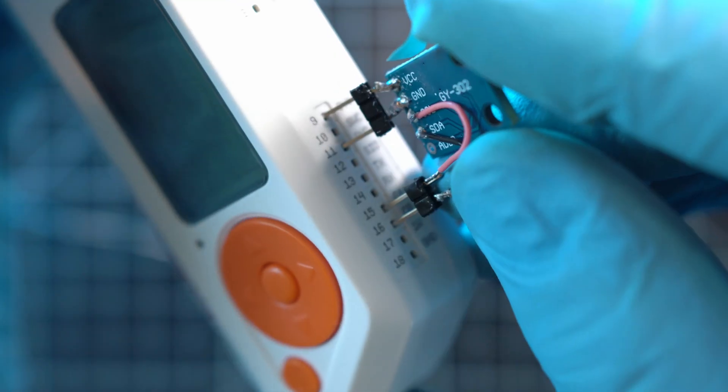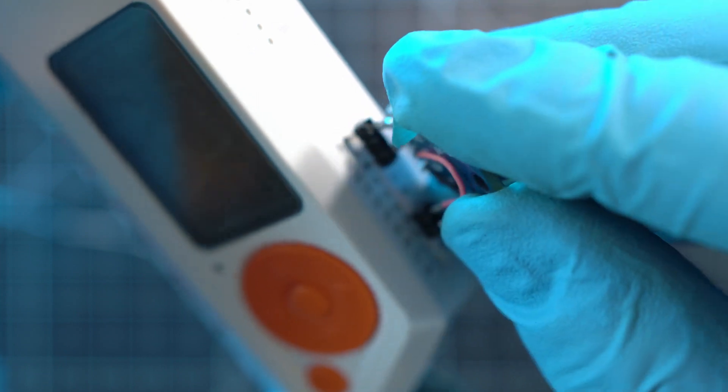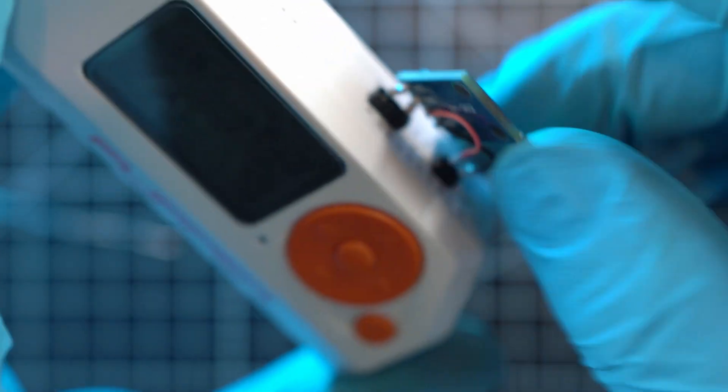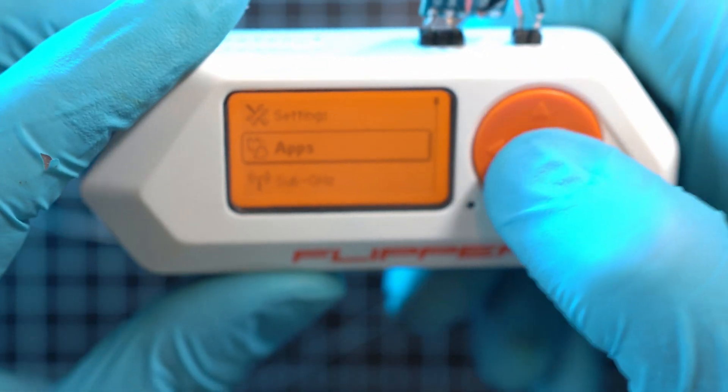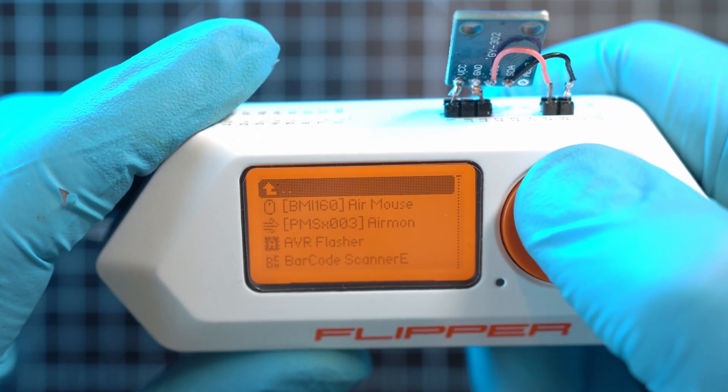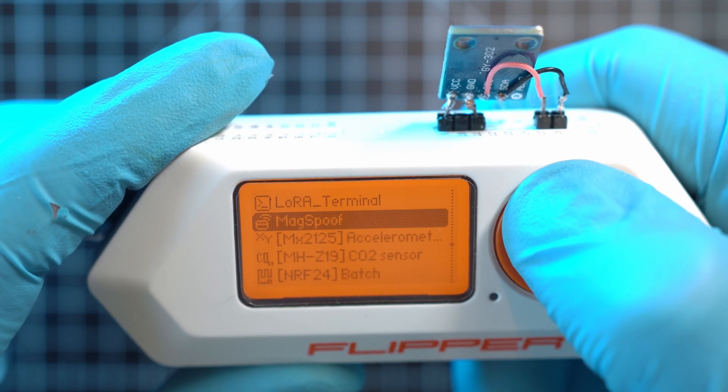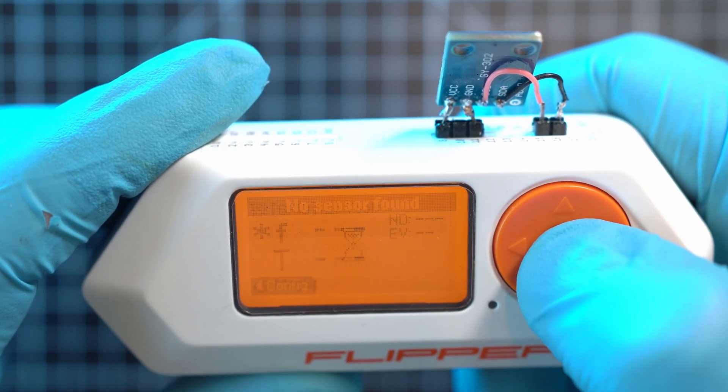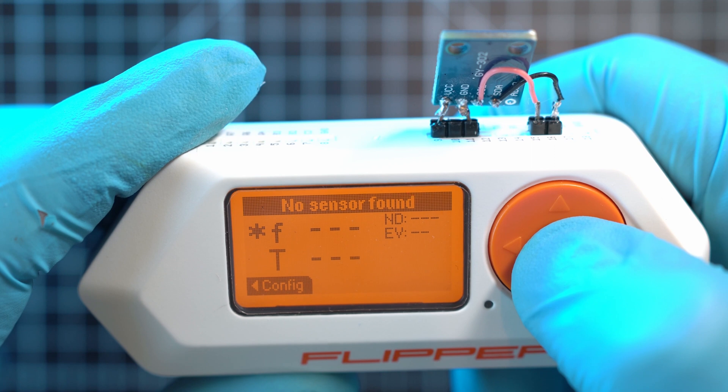Let's test it out. Make sure to subscribe, or else your Flipper drains the battery. Go apps, then GPIO, and search for light meter. There is a lot of apps for GPIO port. Oh, what? No sensor found.